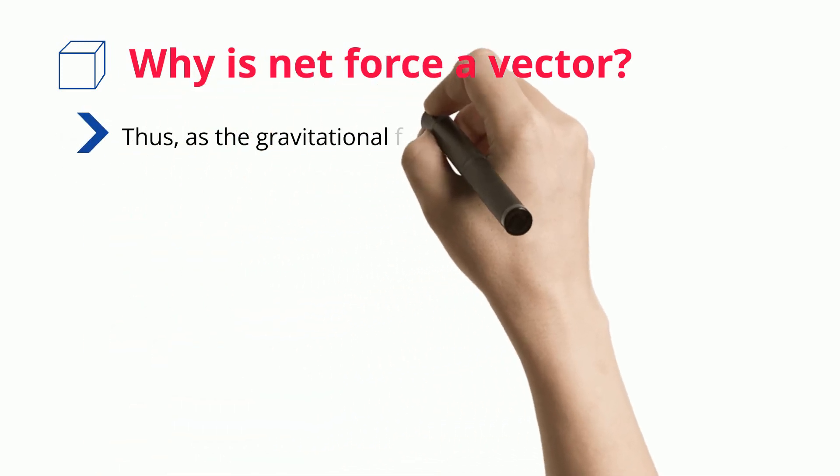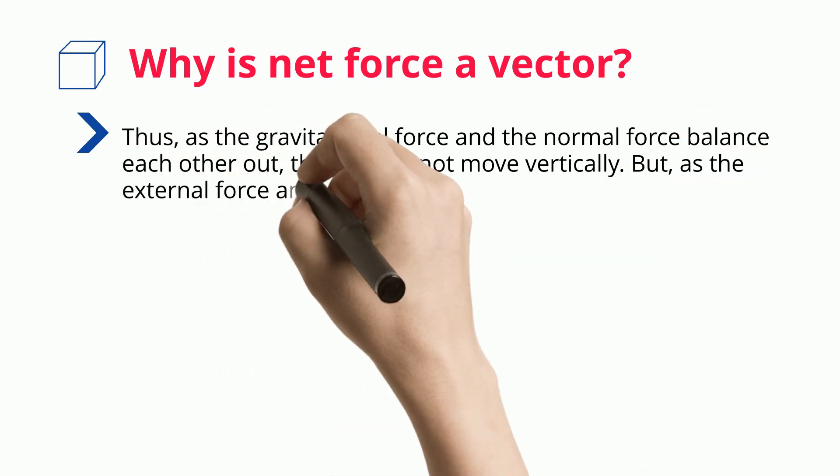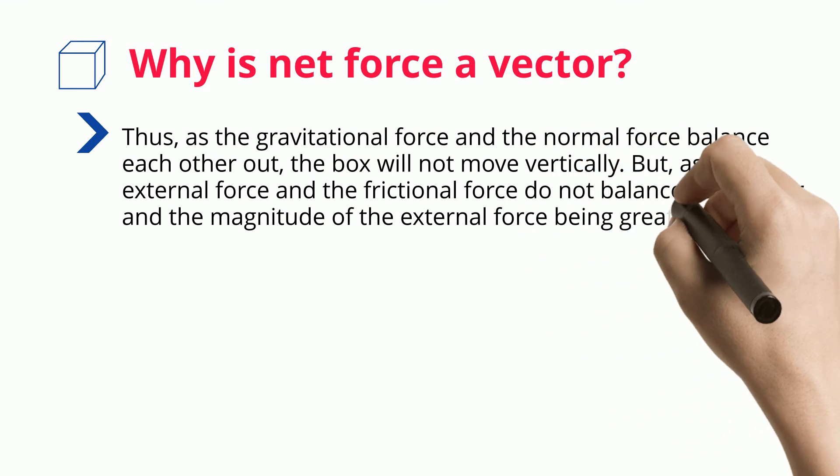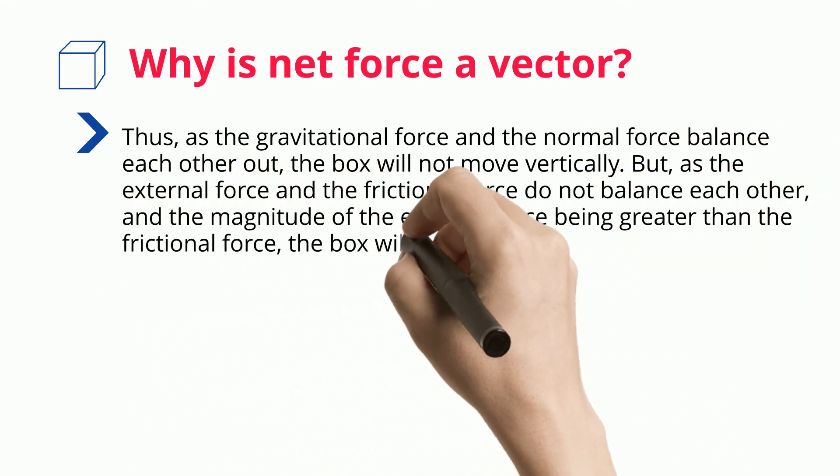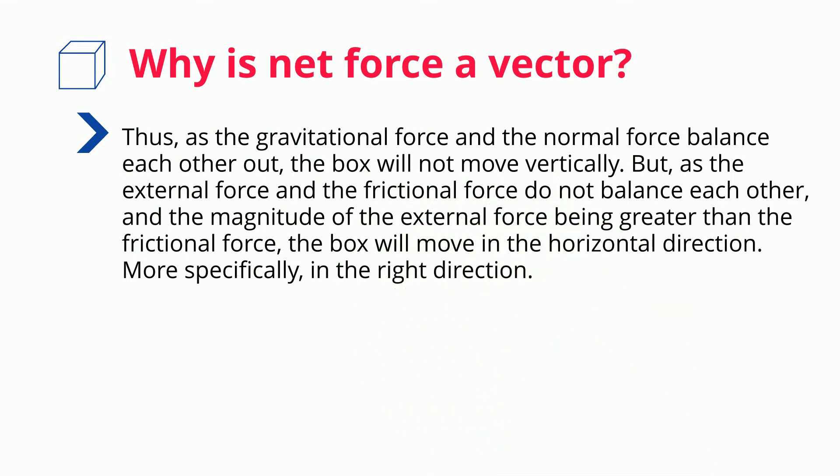Thus, as the gravitational force and the normal force balance each other out, the box will not move vertically. But as the external force and the frictional force do not balance each other, and the magnitude of the external force being greater than the frictional force, the box will move in the horizontal direction. More specifically, in the right direction.